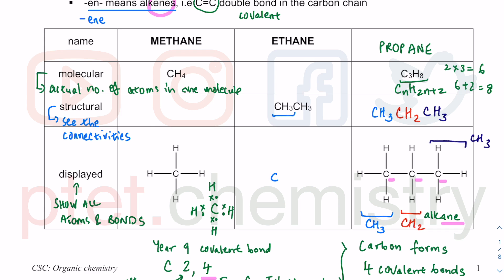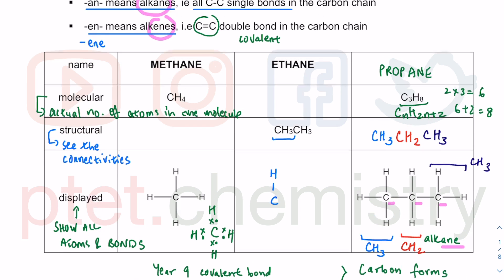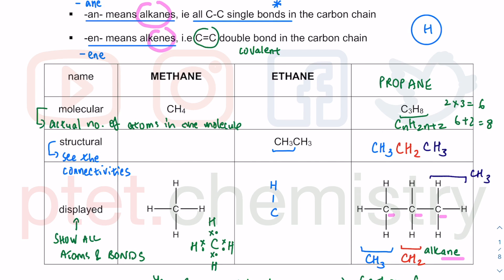Carbon forms four covalent bonds. It forms a single bond to hydrogen because hydrogen only has one electron in the outer shell and just needs to share one electron to complete the first shell — so hydrogen always forms a single covalent bond. For ethane, CH3 is bonded to CH3. We can see the carbon-carbon single covalent bond, confirming it is an alkane. The molecular formula is C2H6 — one carbon plus one carbon gives C2, and three plus three gives six hydrogen.